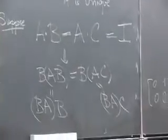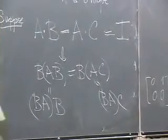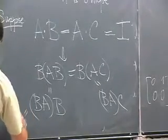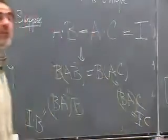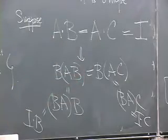And since B was assumed to be an inverse for A, this is equal to the identity times B. And this is equal to the identity times C. And the identity times any matrix is itself. And therefore, B has to equal C.